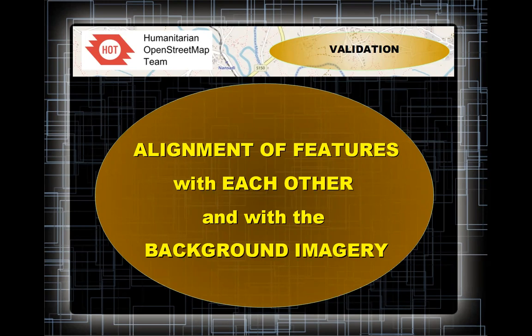Buildings should be on the correct side of the road, not overlapping or connected to the road, and in alignment with the background imagery as stipulated in the instructions. Please read the instructions — they should tell you whether you need to align the existing map features to the imagery, or align the imagery to the existing map features. Be very clear on that. Roads, rivers, and buildings all have to be the correct distance from each other — all of those features help people on the ground find their way and understand where they are.